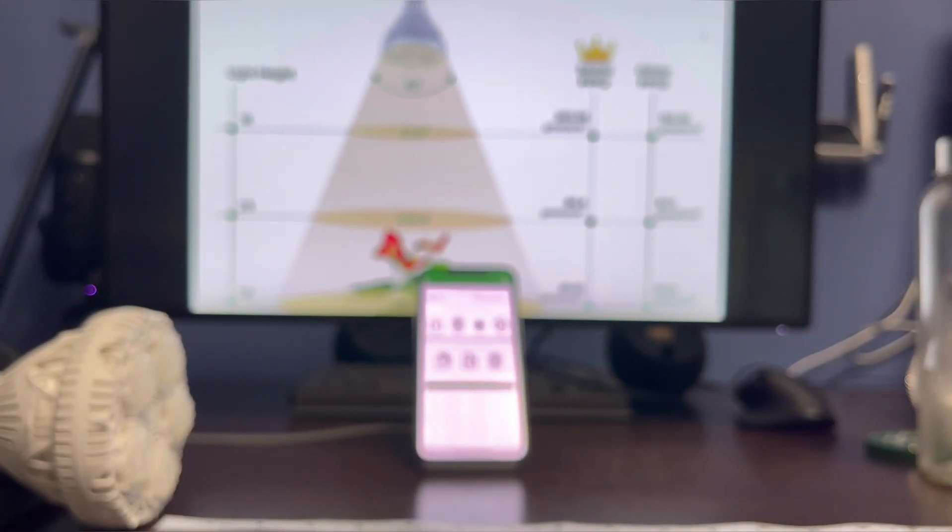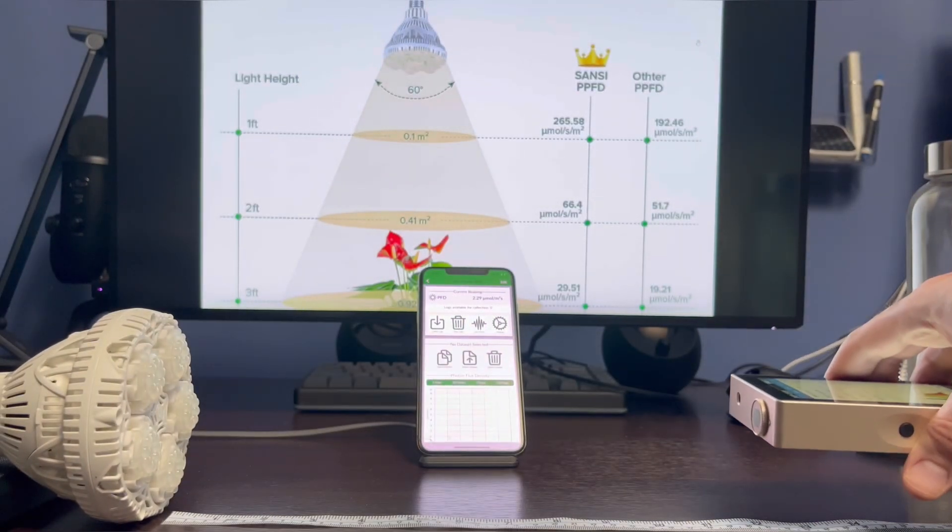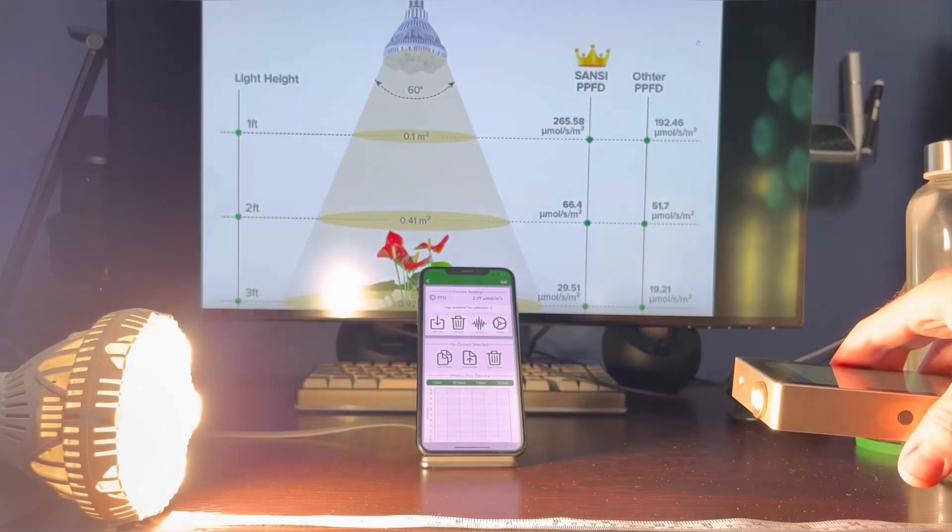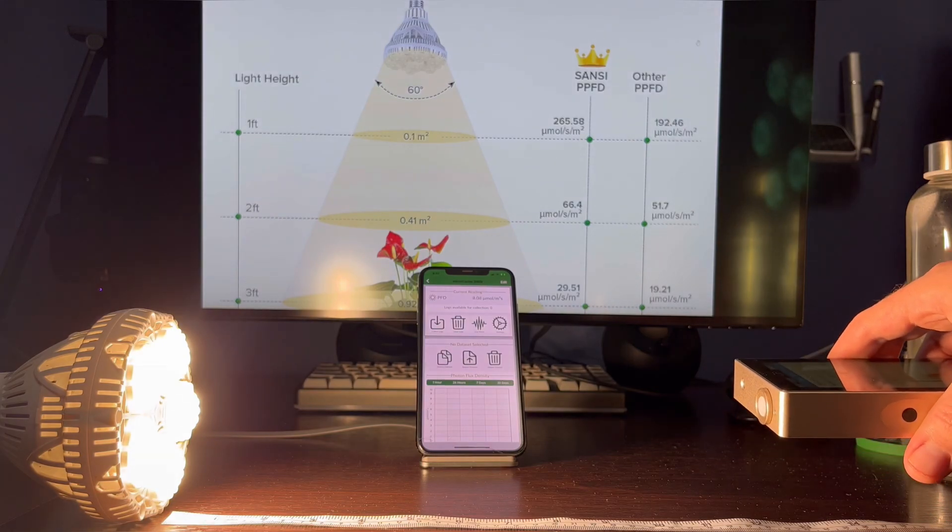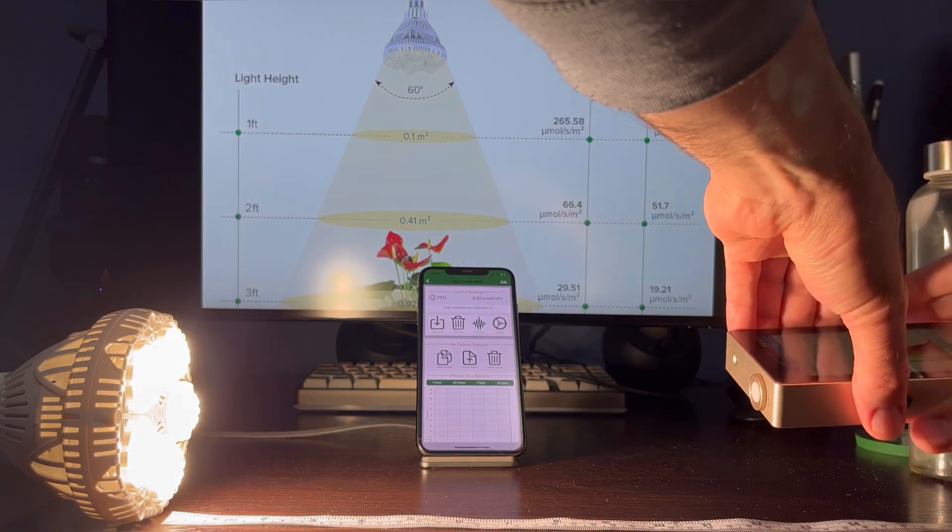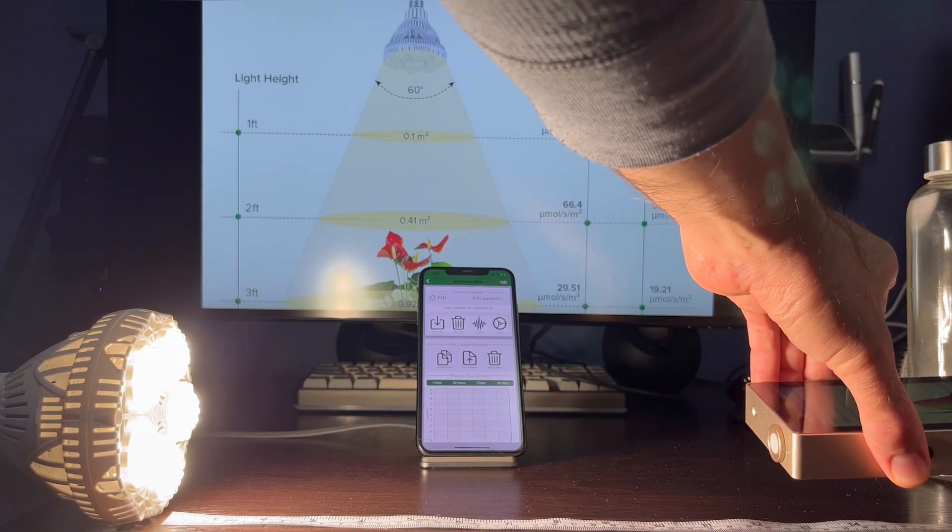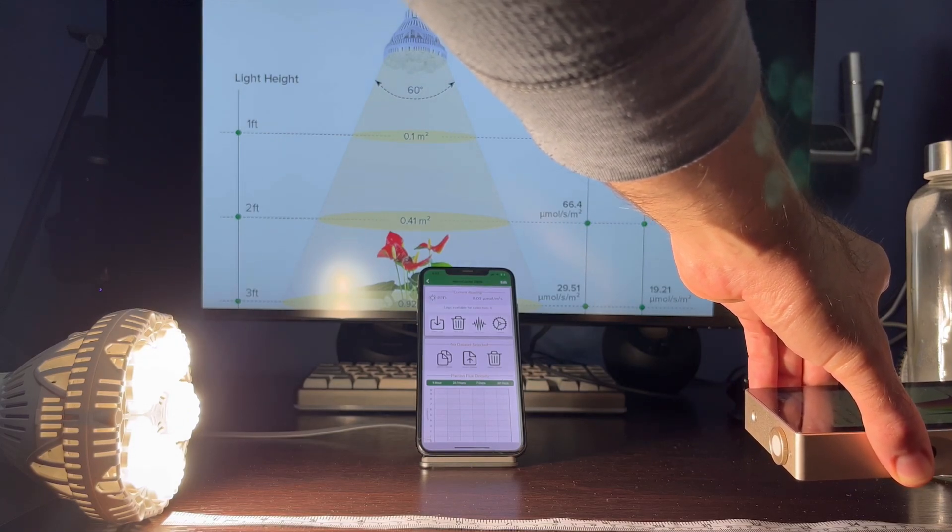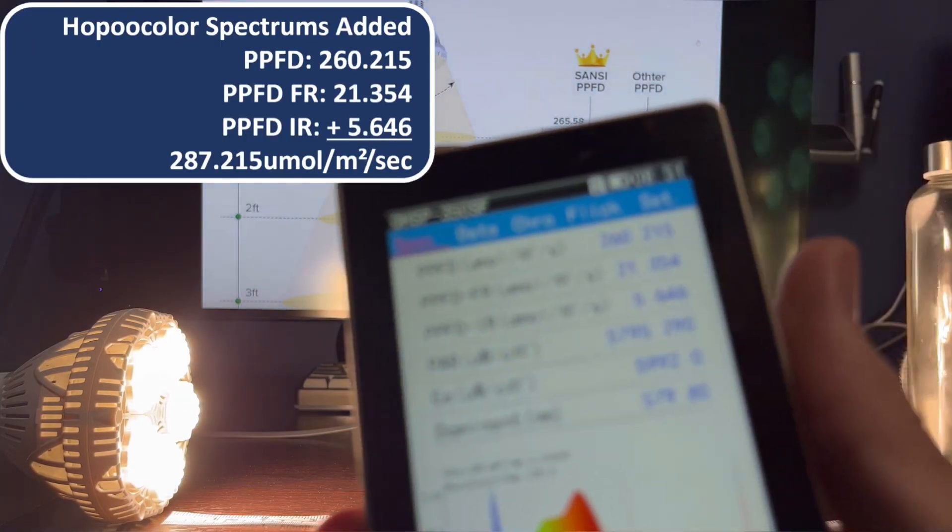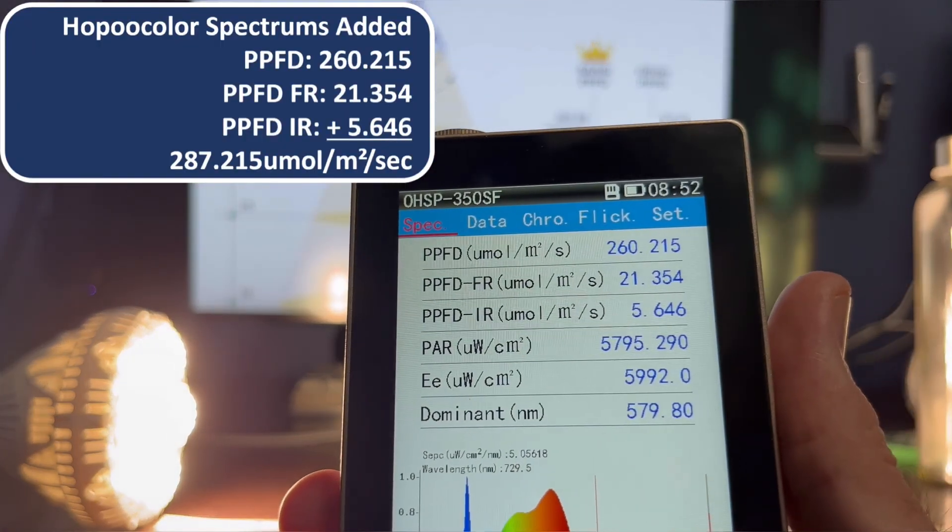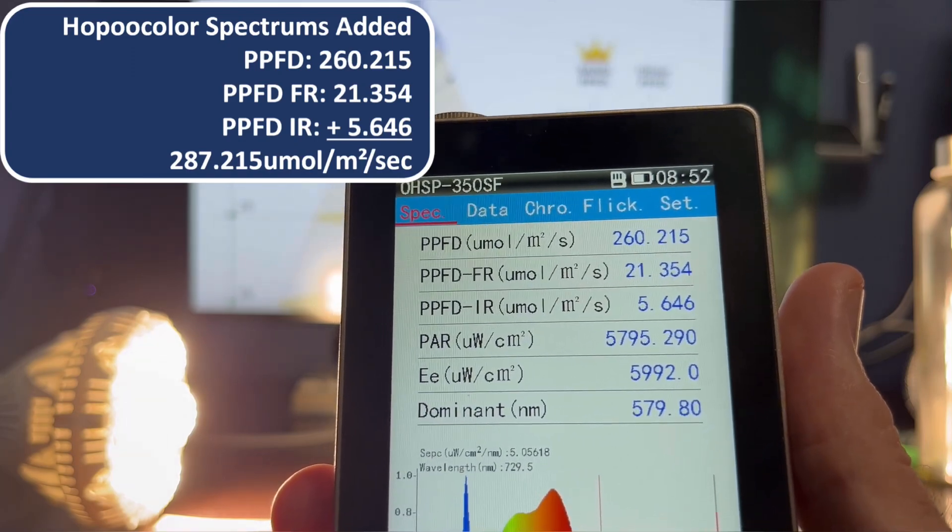This sensor takes multiple measurements, and I'm going to stop it once I get a good reading. Turning on the bulb, let's see what we have. The PFD for this device - we'll add the top three rows together - gives us 287 micromoles per meter squared per second.